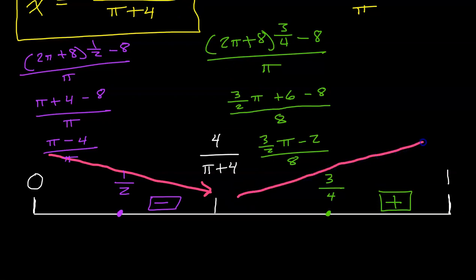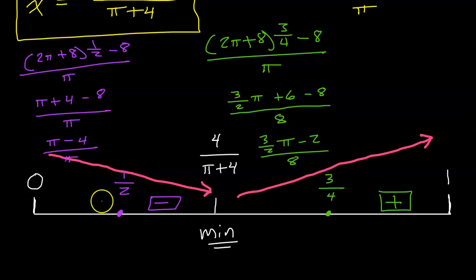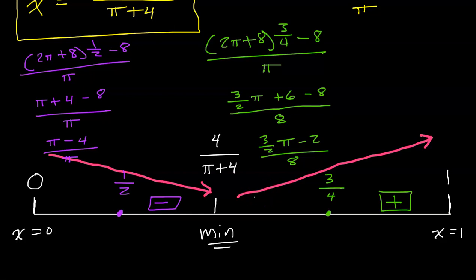The function is decreasing then increasing around the critical number, which means we have a relative minimum there — not a maximum. This value is actually the worst number to use for maximizing area. That means the maximum area will occur at one of the endpoints of the domain, either x = 0 or x = 1. This is why this lesson is called optimization at an endpoint maximum.